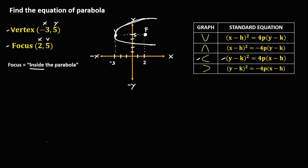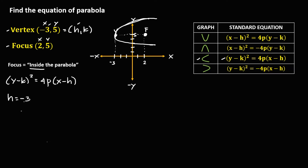The standard equation is (y − k)² = 4p(x − h). To solve for h and k, since the vertex is (h, k), therefore h is negative 3 and k is positive 5.